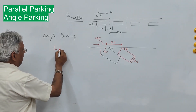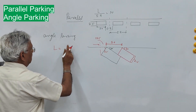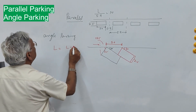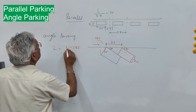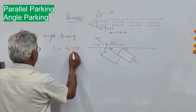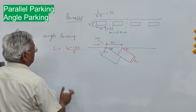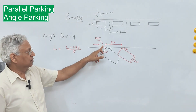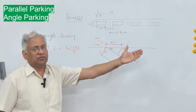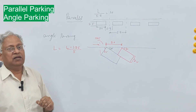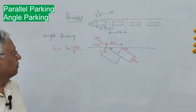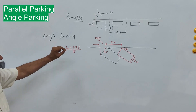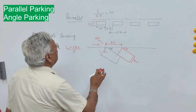The number of cars that can be parked in a length L at 30-degree parking is: L minus 1.25, divided by 5. So 1.25 is the loss in the first slot, and then for each subsequent car you need 5.5 meter length along the curb. This gives the number of cars for a 30-degree angle parking.